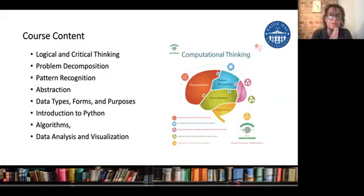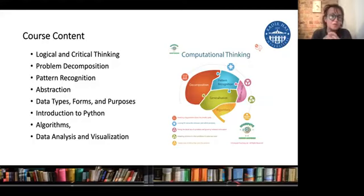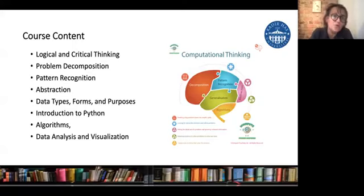That is why we're going to start with logical and critical thinking. Then we're going to formally learn how to solve a problem in any field — these are called four pillars of problem solving. The first one is breaking down the problem into smaller problems, called problem decomposition. Then if there is a pattern we can recognize, that is called pattern recognition. Then we try to generalize it to every problem — that is called abstraction. And the last one is developing an algorithm, called algorithm.